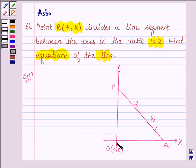Let the x-intercept of this line be A and the y-intercept be B. R is the point (h,k). So the coordinate of point Q is (A,0) and point P is (0,B).